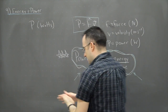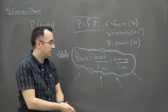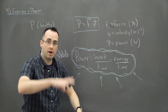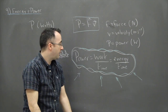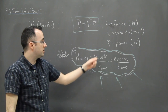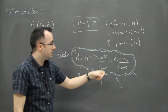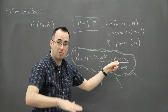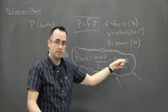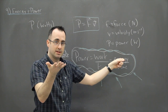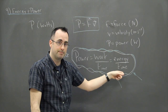This means — as I was alluding to before in the horsepower lab, where you run up the stairs to find your power — your power is related to the work done over time. In this case, if you're running up the stairs, it's just the potential energy: MgH over your time.